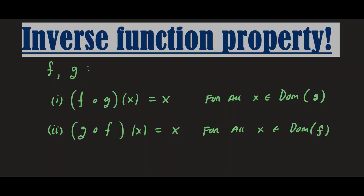Once both compositions result in x, then we can say the two functions f and g are inverses of each other. There's another way to do it — you can also compute the inverse formula, which we will do for one example — but the key idea is to know how to do these compositions and get x at the end.